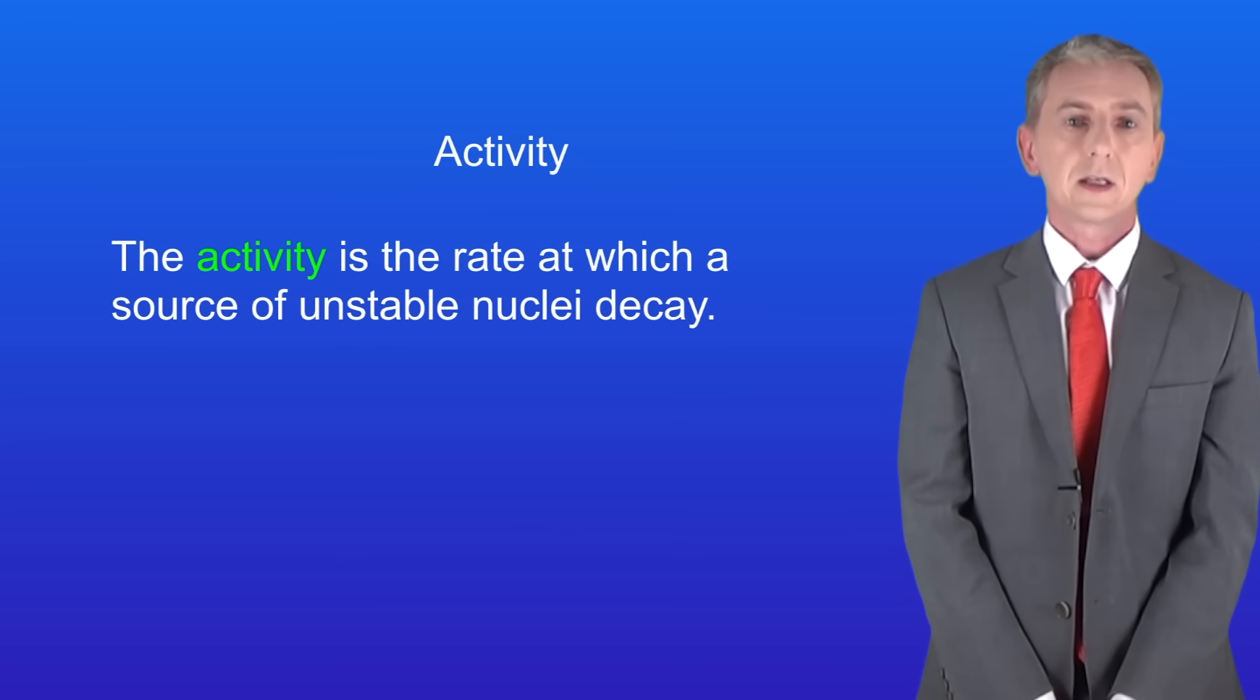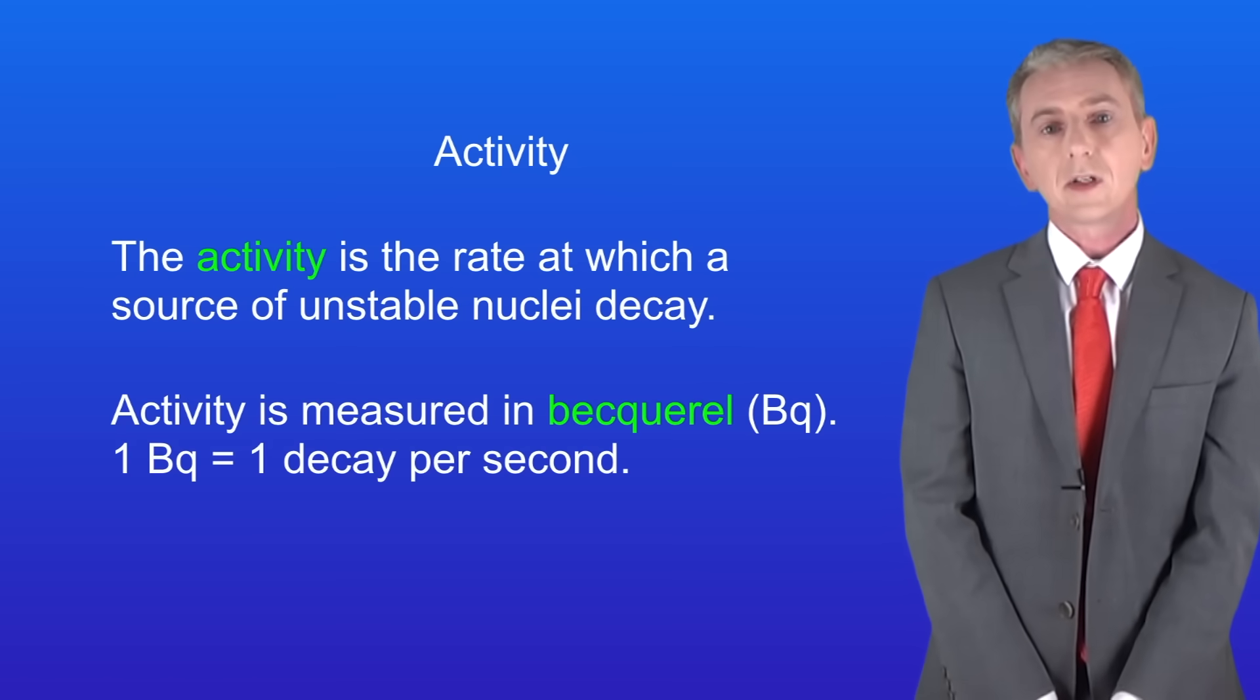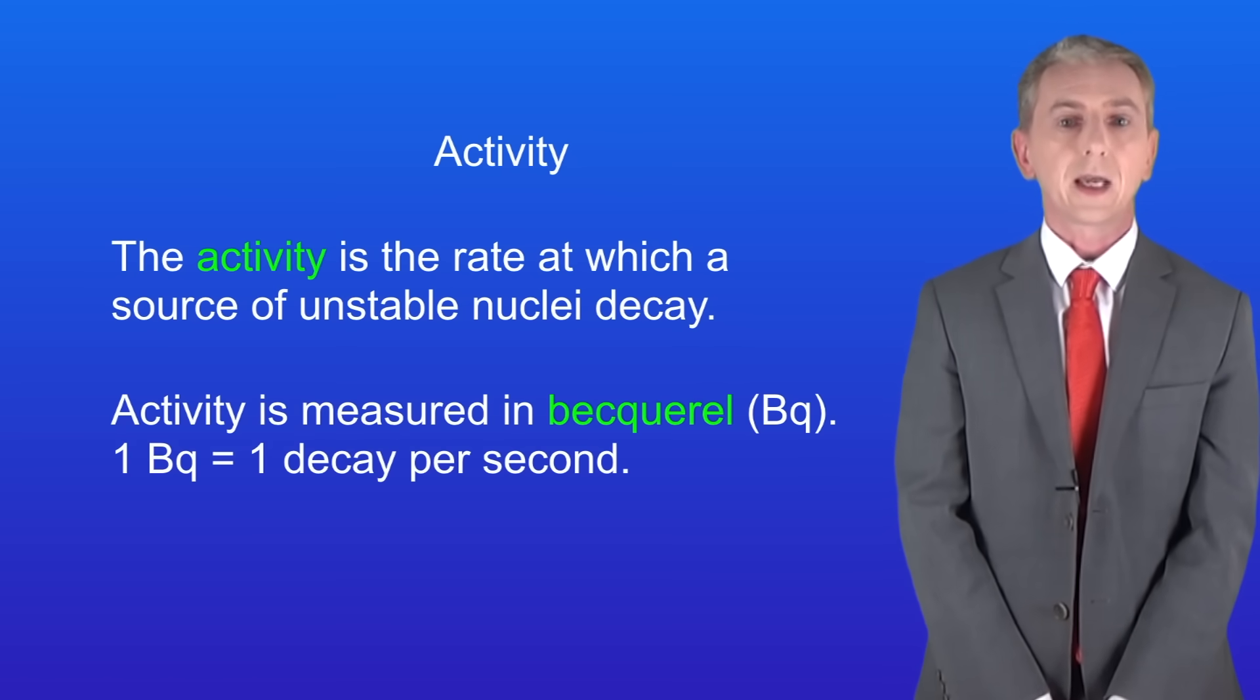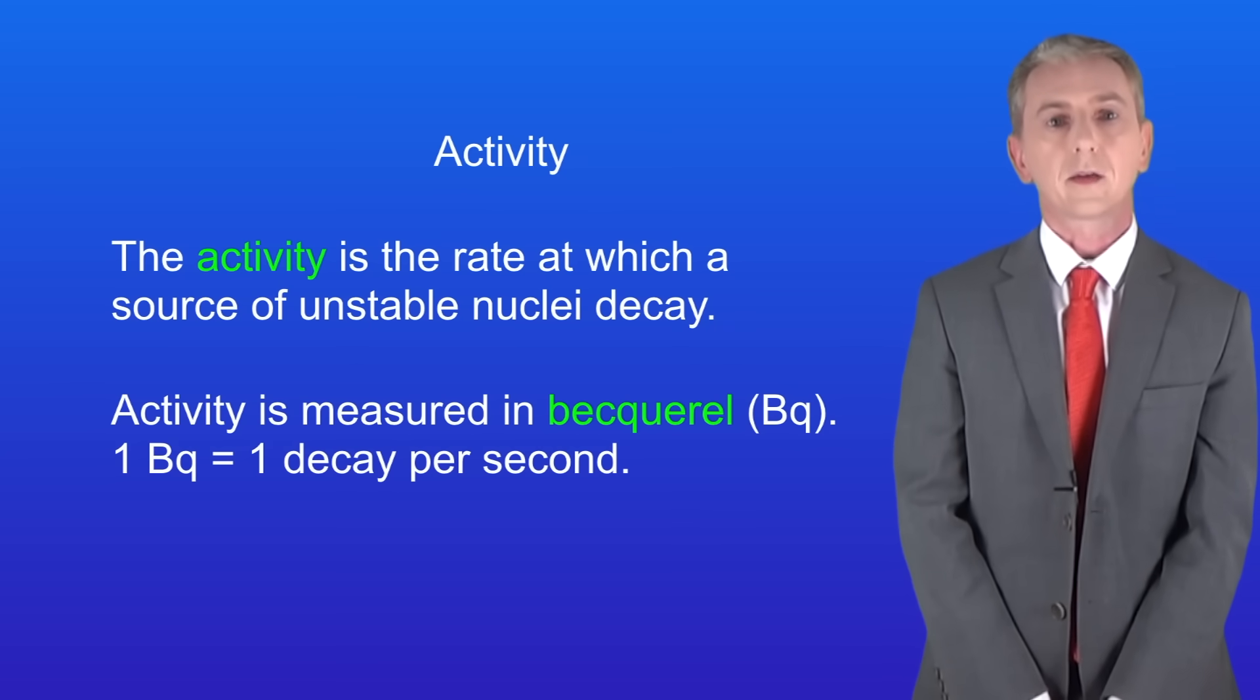Now the activity is the rate at which a source of unstable nuclei decay. Activities measured in Becquerel and that has the symbol capital B lowercase q. One Becquerel equals one decay per second.